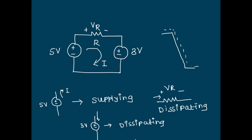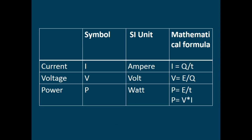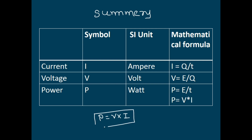To summarize: in this lecture we covered current, voltage, and power in electrical circuits and how they are related. They are related by the expression P = V × I. I hope you are able to understand what current, voltage, and power are. If you have any queries or doubts, please write in the comment section below. If you liked this video, please subscribe to the channel 'All About Electronics'. See you soon.